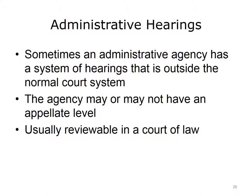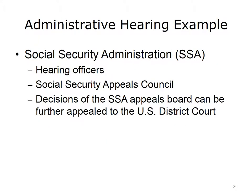Many administrative agencies of the executive branch have their own system of review outside the normal judicial system, known as administrative hearings. The agency may or may not have its own appeals process, but either way its decisions can usually be appealed to a court of law. An example is the Social Security Administration, or SSA: if someone is denied benefits, he or she can request a hearing from an SSA officer; if still denied, request a review by the Social Security Appeals Council; and if dissatisfied with that decision, file a case in the U.S. District Court.